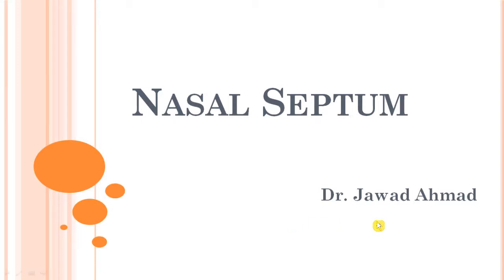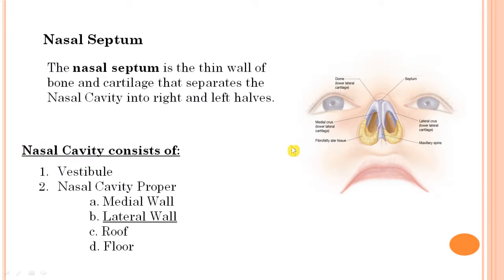Welcome everybody to this new lecture on ENT. Today we are going to start the nasal septum as well as its diseases. First of all, the basic anatomy of the nasal septum — we have studied it in the detailed anatomy of the nose, but here is just a brief overview. The nasal septum is a thin wall made up of cartilage as well as bone, and it divides the nasal cavity into right and left halves.